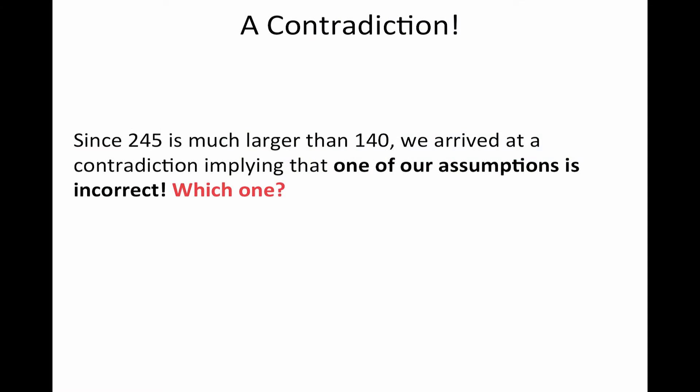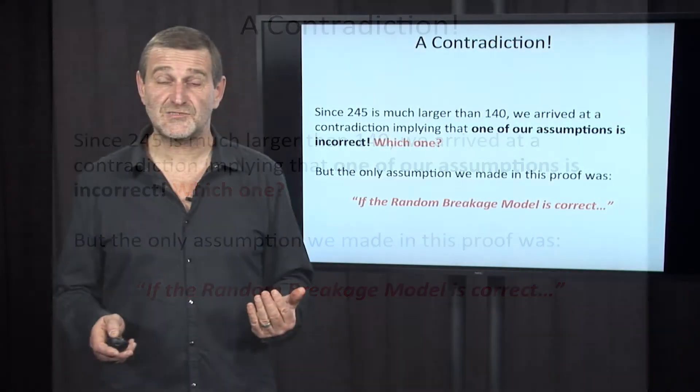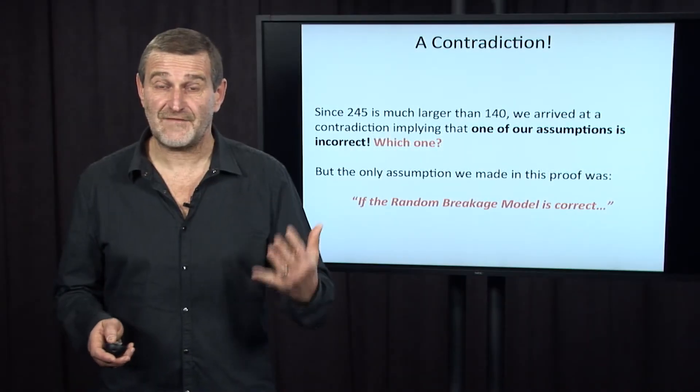But which one? Well, there isn't much choice, because we have made only one assumption: if the random breakage model is correct. And since, based on this assumption, we arrive at a contradiction, it means that our assumption was incorrect, which implies that the random breakage model failed.